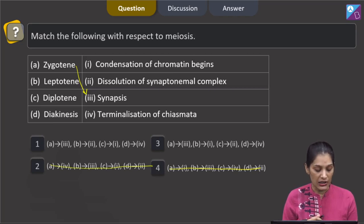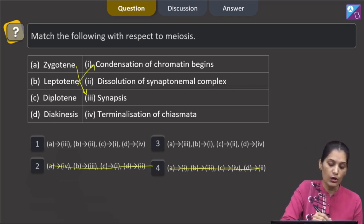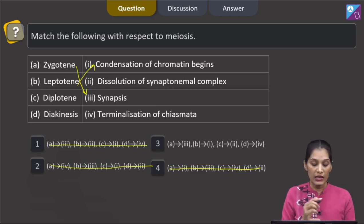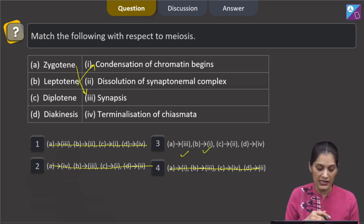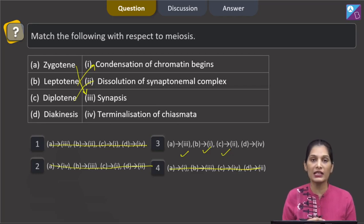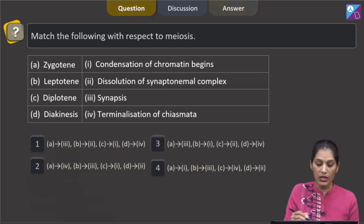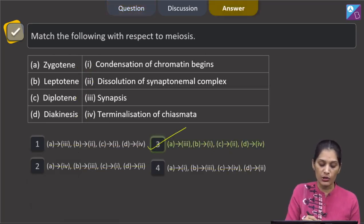Now B - leptotene. Leptotene matches with condensation of chromatin begins because this is the very first stage of prophase 1 where condensation of chromatin begins. So B matches with one only in third option. So this option is also ruled out. Your work is easier now. C matches with second - diplotene, dissolution of synaptonemal complex, true. And D is where terminalization of chiasma takes place. So D matches with fourth. So the correct option for the given question is option three.